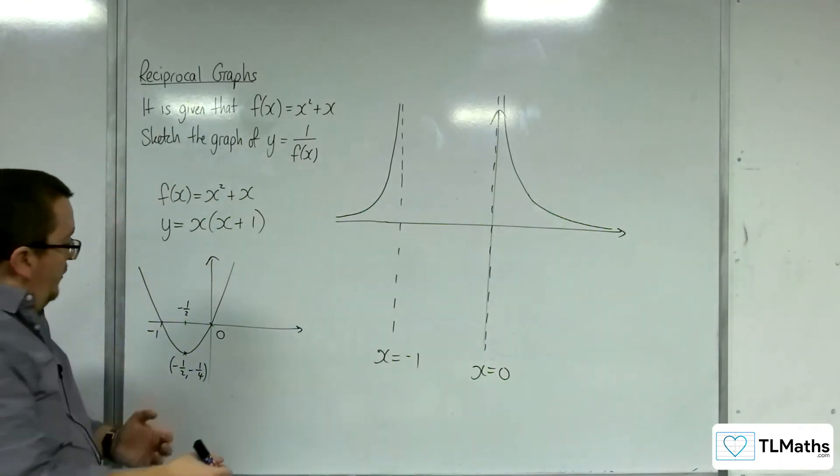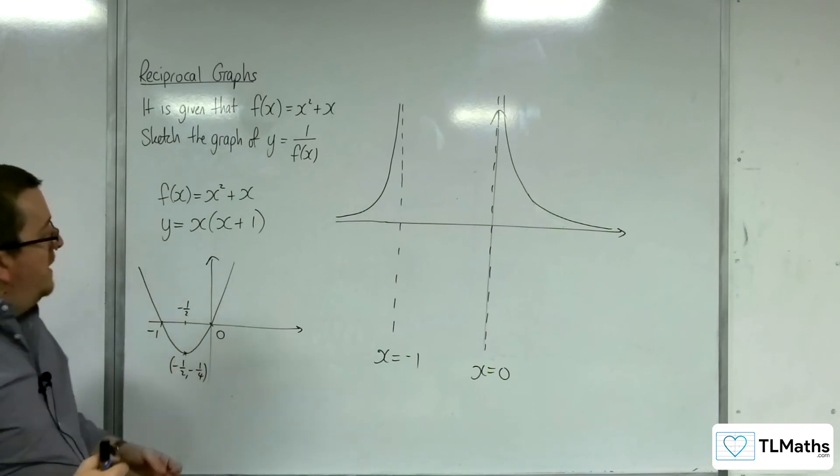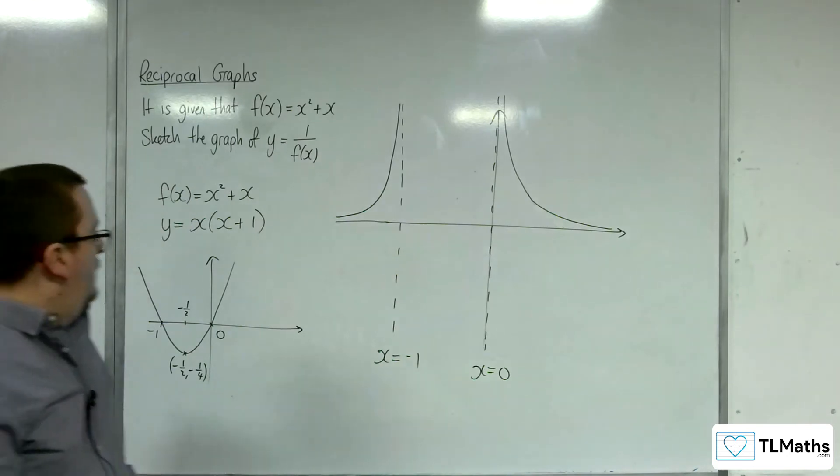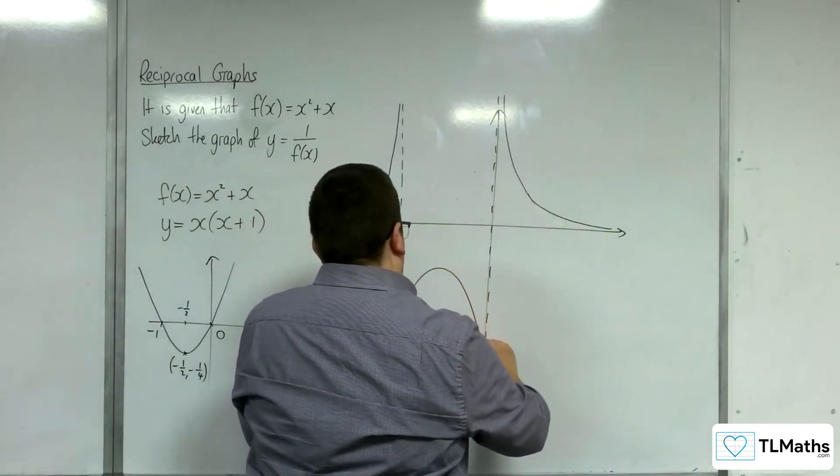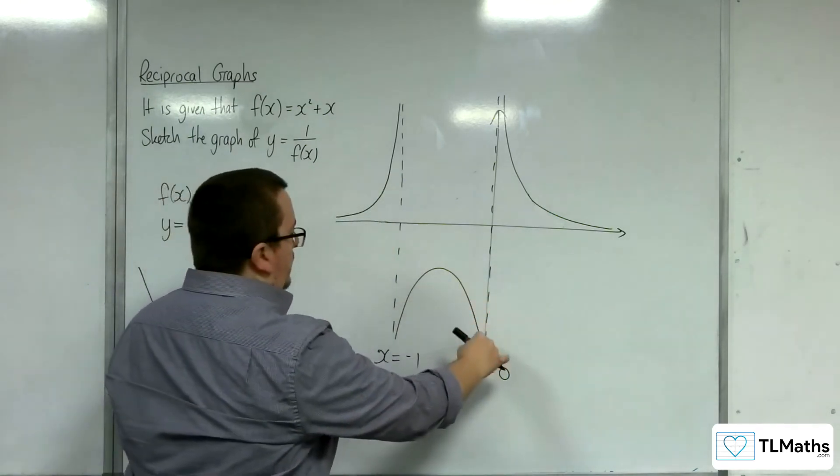Now, as for this part where the original function is negative, because it's below the x-axis, that means 1/f(x) will be negative as well. It'll look like this, tending towards the two asymptotes.